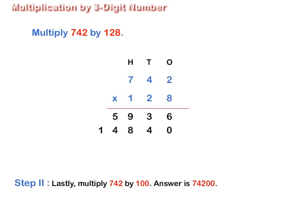Step 3: Multiplying 742 by 100, we get 74,200.